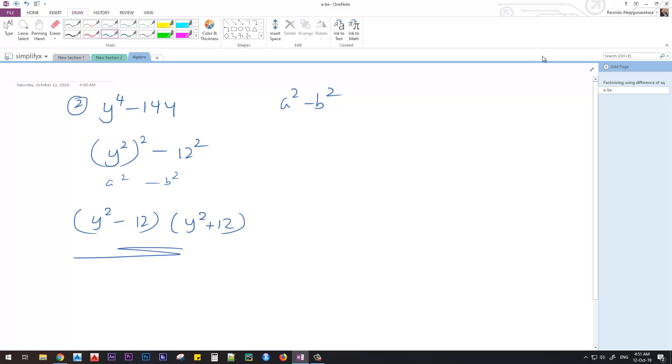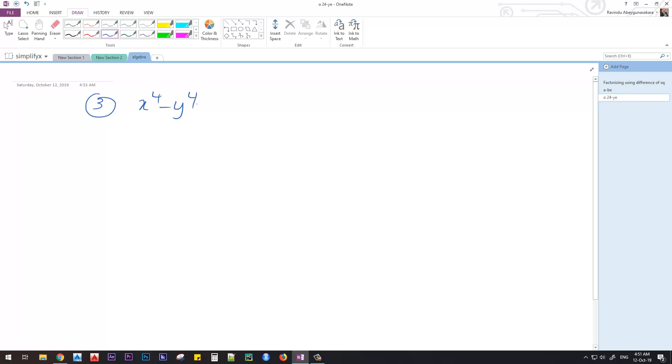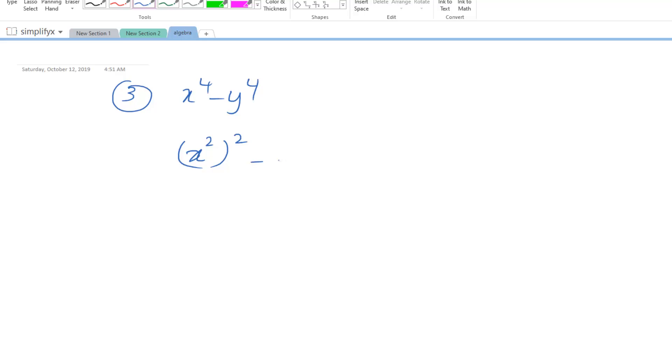Let's do another problem. Here we have X to the power 4 minus Y to the power 4. X to the power 4 can be written as (X squared) squared, and Y to the power 4 can be written as (Y squared) squared. Then we get the result (X squared - Y squared)(X squared + Y squared). This X squared minus Y squared term can be further simplified.